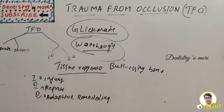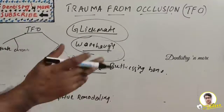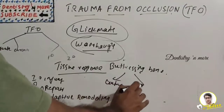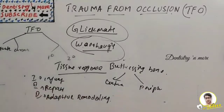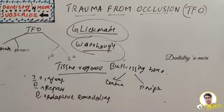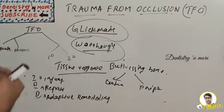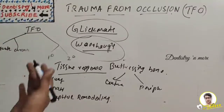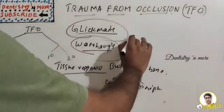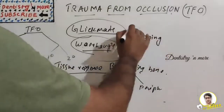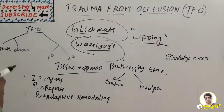Buttressing bone formation occurs within the jaw (central buttressing) or on the surface (peripheral buttressing). In central buttressing, endosteal cells deposit new bone restoring bony trabeculae and reducing marrow spaces. Peripheral buttressing occurs on the facial and lingual surfaces of the alveolar plate. Depending on severity, peripheral buttressing may produce a shelf-like thickening of the alveolar margin called lipping, or a pronounced bulge in the contour of the facial and lingual bone.